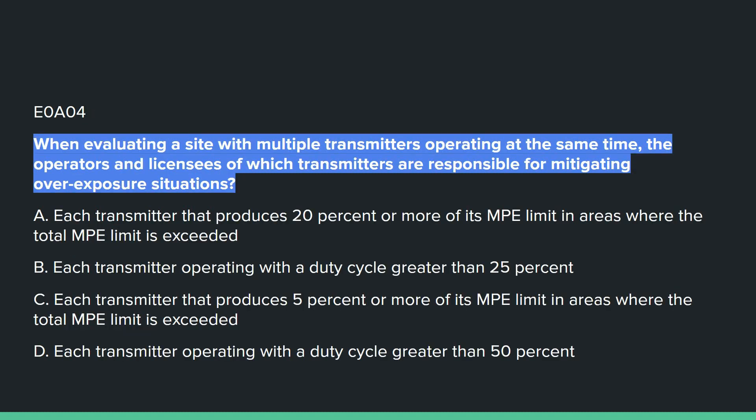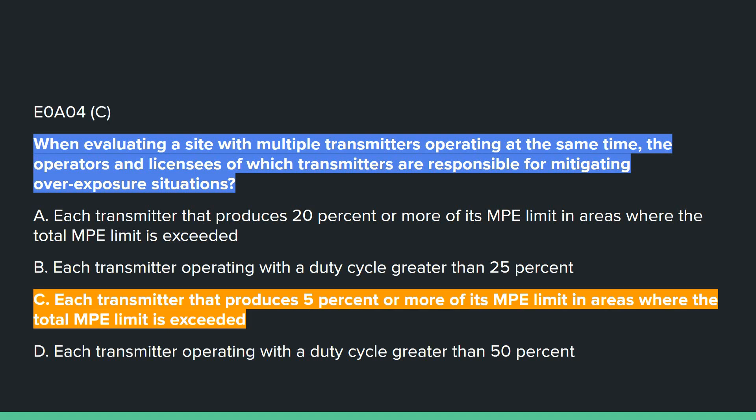E0A04: When evaluating a site for multiple transmitters operating at the same time, the operators and licensees of which transmitters are responsible for mitigating overexposure situations? C — each transmitter that produces 5% or more of its MPE limit in areas where the total MPE limit is exceeded.